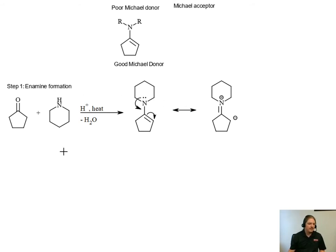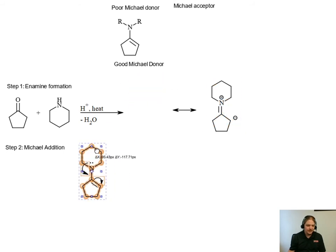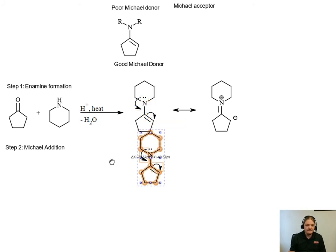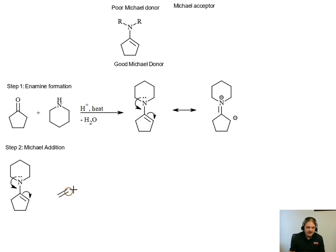And so now we can go into step two, the Michael addition. I'm going to copy this thing and leave those arrows there because I know that I need them, or at least one of them. And so the nucleophilic attack involves the pi bond or the lone pair on the carbon - the nucleophilic carbon atom here in the enamine attacks the beta carbon of the Michael acceptor.